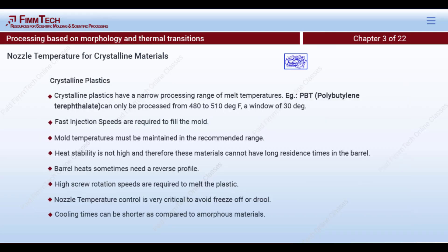Every plastic has an ejection temperature — the temperature at which the part inside the mold has enough strength to be ejected. Ejection temperatures for crystalline materials are usually higher than for amorphous materials, because the crystals provide structural strength to the part. As soon as the crystals form, the part can be ejected, so cooling times for crystalline materials are actually shorter than for amorphous materials.